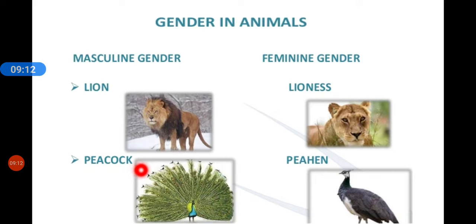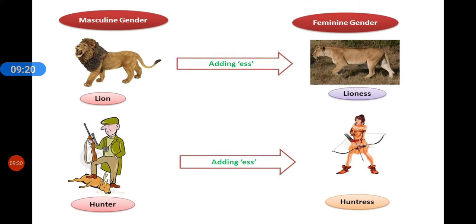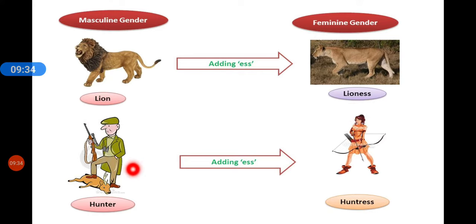Similarly, peacock is masculine gender and peahen is feminine gender. We also learned certain rules for conversion of masculine to feminine. For example, we add -ess in some cases: lion becomes lioness. Similarly, hunter becomes huntress — the e is dropped and -ress is added, giving the spellings h-u-n-t-r-e-s-s.